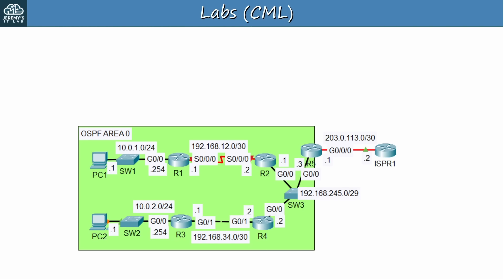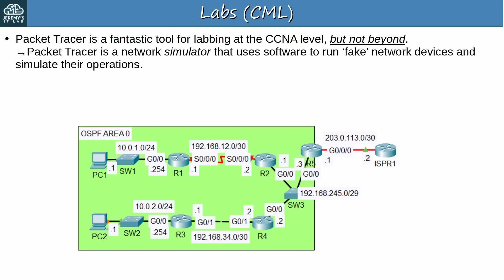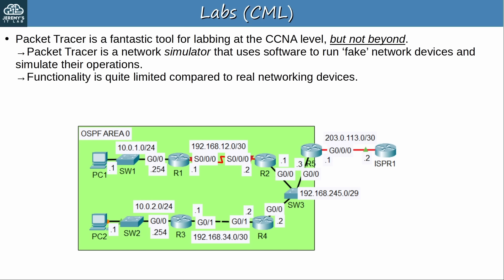Another very important part of studying for the ENCOR exam is labbing. For the labs in this course, we will use CML, Cisco Modeling Labs. Packet Tracer is a fantastic tool for labbing at the CCNA level, but not beyond — it's just too limited. Packet Tracer is a network simulator that uses software to run fake network devices and simulate their operations, and its functionality is quite limited compared to real networking devices. With new updates, Cisco adds new commands to Packet Tracer, but it still supports only a fraction of the commands and features available on real Cisco devices.